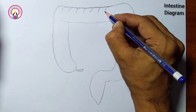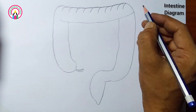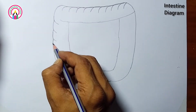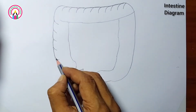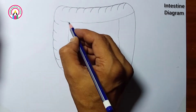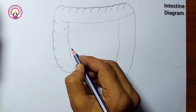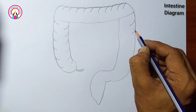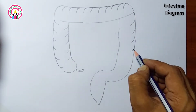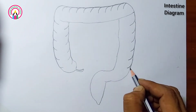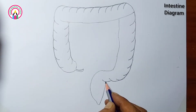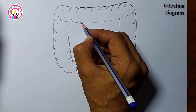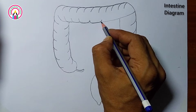One: structure and parts. Cecum — the starting part connected to the ileum of the small intestine. Colon — divided into four sections: ascending, transverse, descending, and sigmoid. Rectum — the final section leading to the anus.